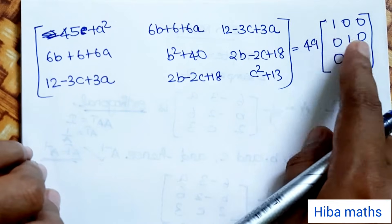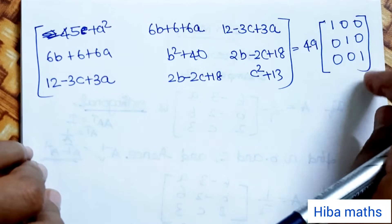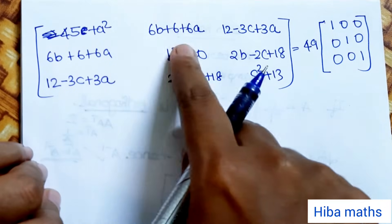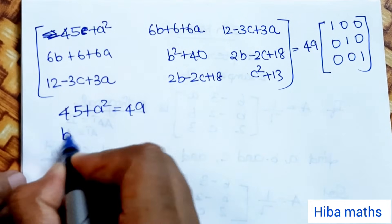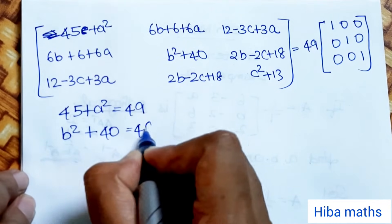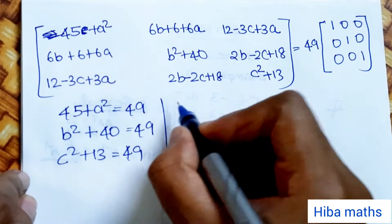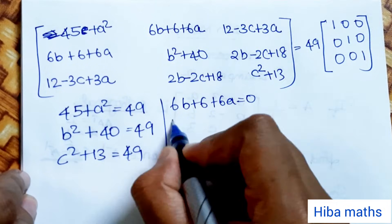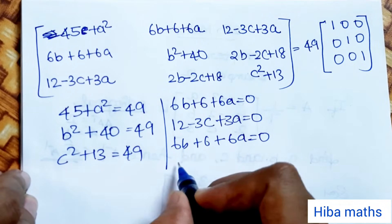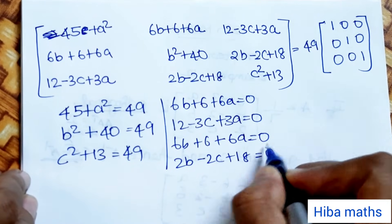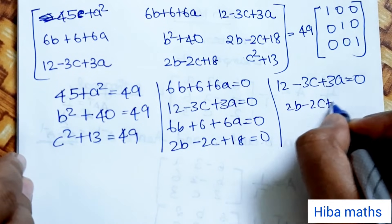So 1 by 49 times the product equals I, meaning the diagonal entries must equal 49 and off-diagonal entries equal 0. Setting off-diagonal terms to zero: 6a plus 6b plus 6 equal to 0, 12 minus 3c plus 3a equal to 0, 2b minus 2c plus 18 equal to 0.